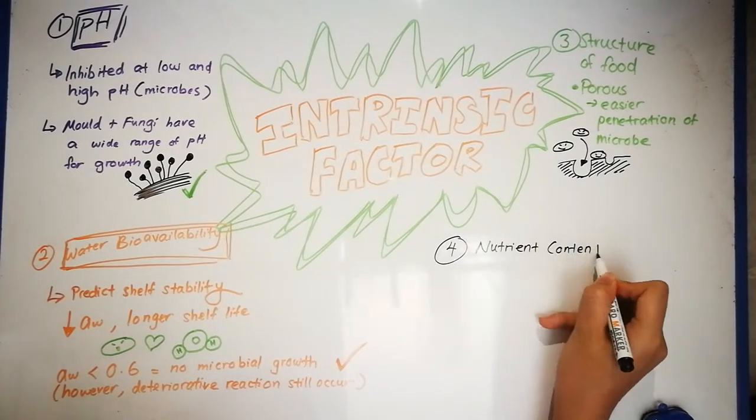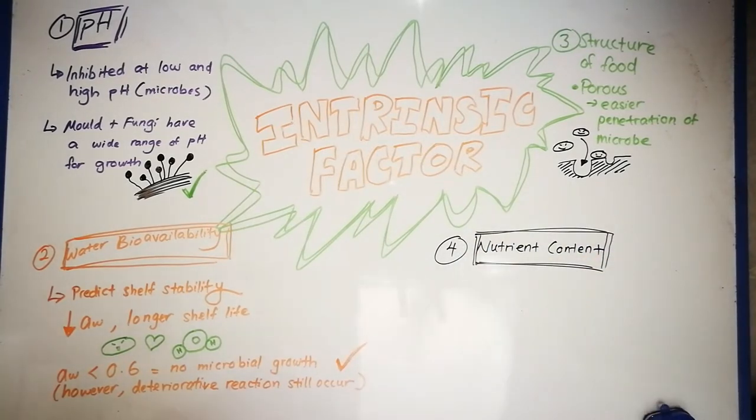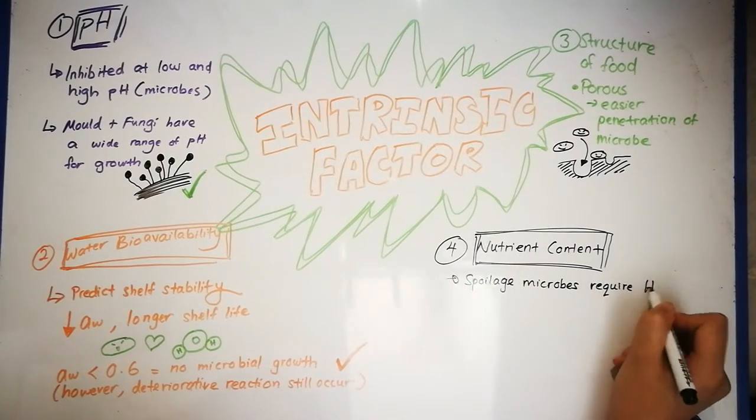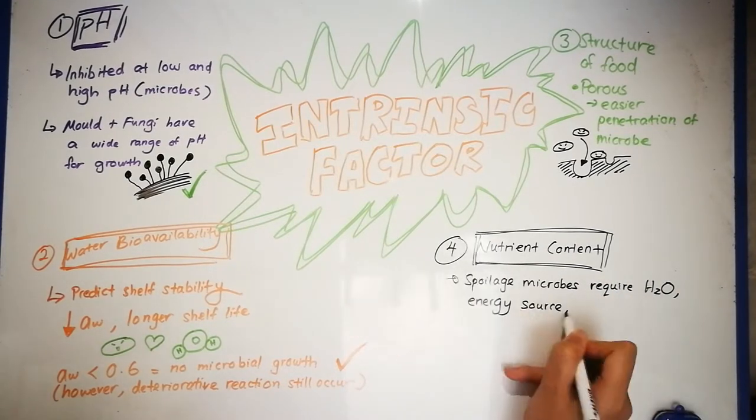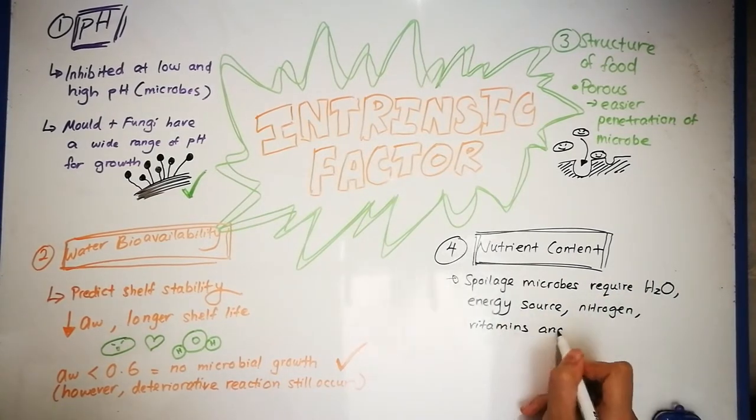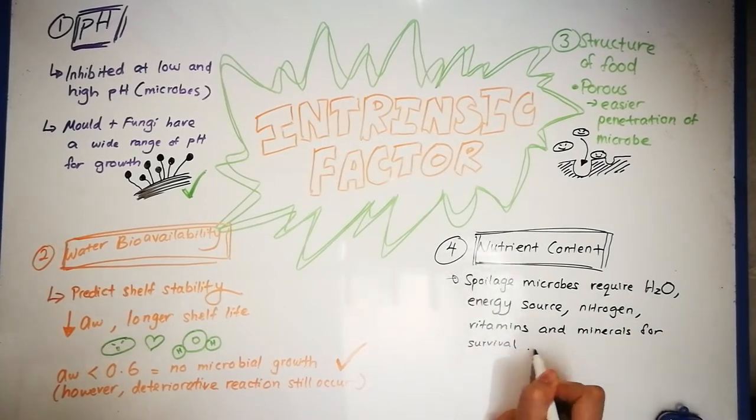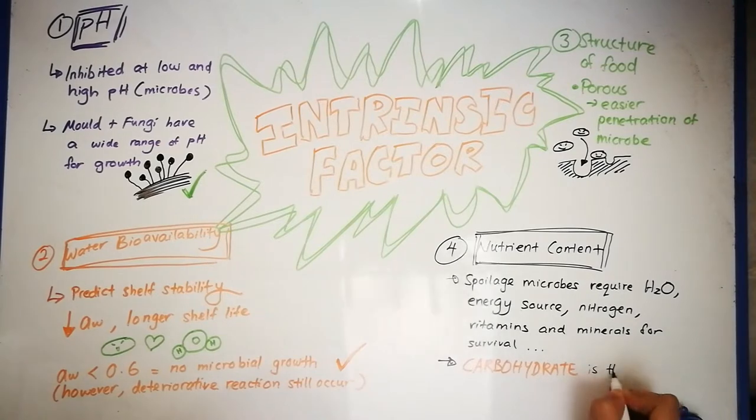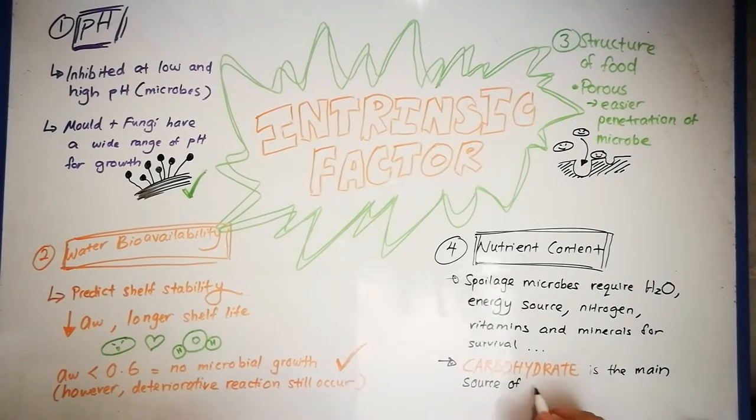Nutrient content of bakery products is also a factor. Spoilage microbes require a range of nutrients such as water, energy source, nitrogen, vitamins and minerals to survive. Carbohydrate is a main ingredient for both cake and bread. Therefore, it acts as a source of carbon and nitrogen to promote the growth of spoilage microbes.